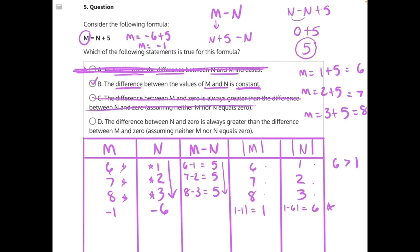For answer choice D, the difference between N and 0, again the absolute value of N, is always greater than the difference between M and 0, or the absolute value of M. In this case, we don't need to plug in any new numbers. We can look at the table we already have and see that that is incorrect, because